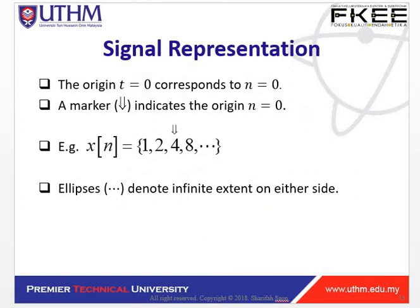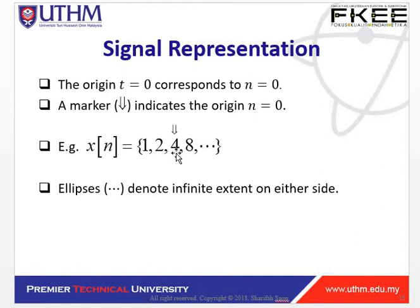Next is signal representation. In a signal, t is at the origin where t equals zero, corresponding to n equals zero. You will see a marker here that indicates the origin. For example, if x[n] equals {1, 2, 4, 8}, the marker is at t equals zero, with n equals negative one to the left, negative two further left, and positive one to the right. The dots denote that the signal is infinite on either side.